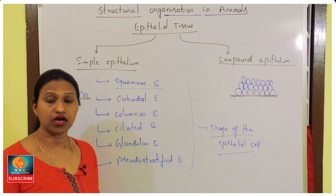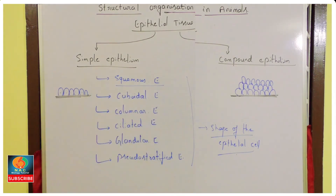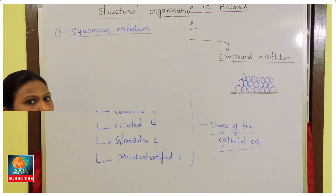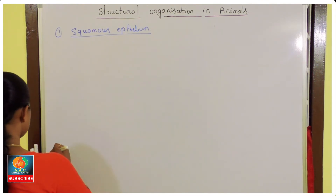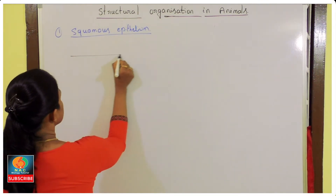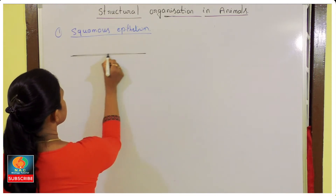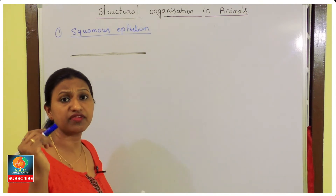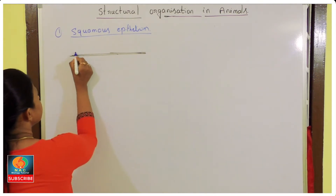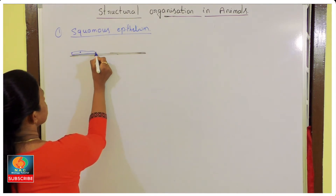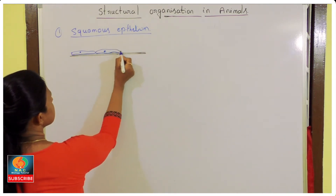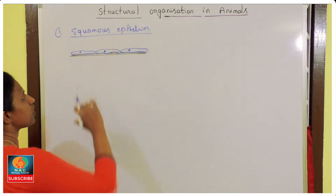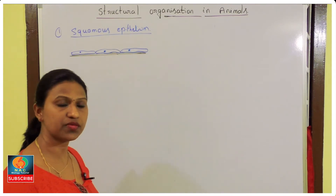First, squamous epithelium. Here is the basement membrane, on which there are irregularly flattened cells present — flattened like plates with a large nucleus. Such cells we call squamous epithelial cells or squamous epithelium.